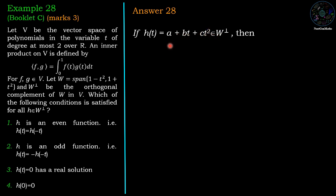Now it belongs to W perp, so it is orthogonal to every vector of W. So it is orthogonal to 1 minus t squared and 1 plus t squared.